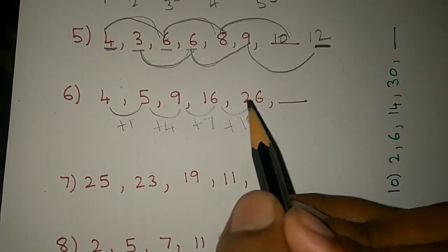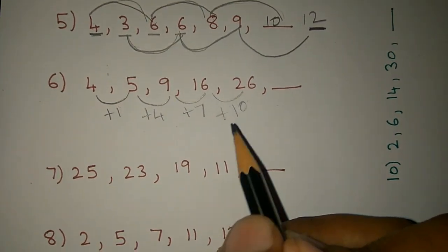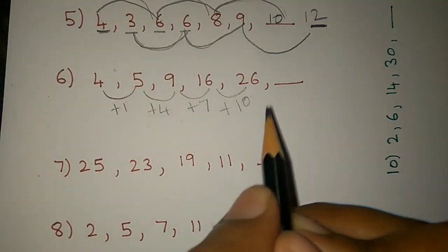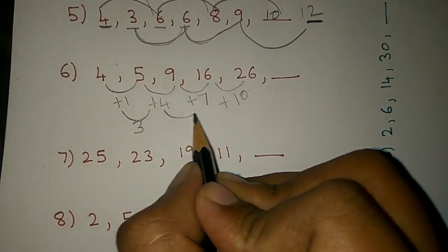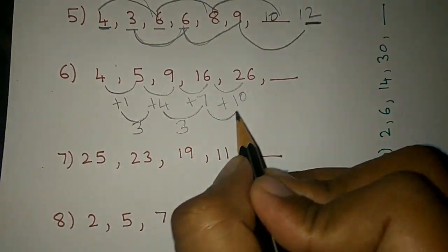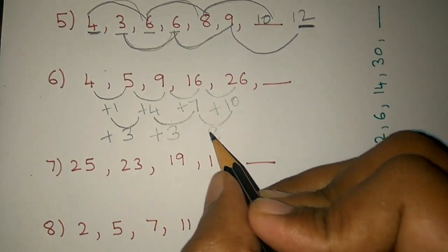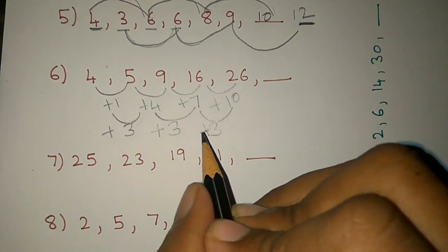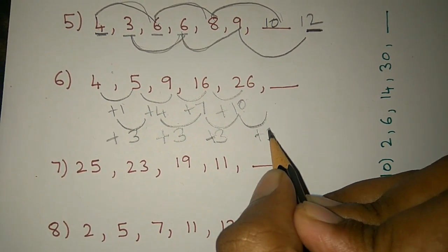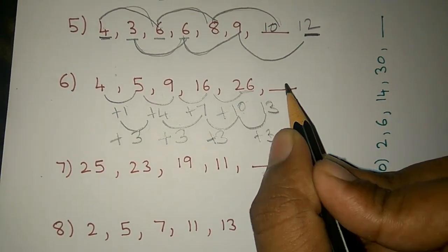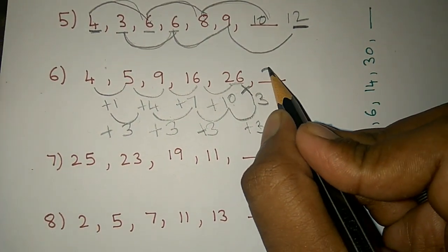We check the second difference — that is, the difference of the differences. The second difference is plus 3 each time: 1, 4, 7, 10 — increasing by 3. So the next first difference is 10 + 3 = 13. If we add 13 to 26, the answer is 39.